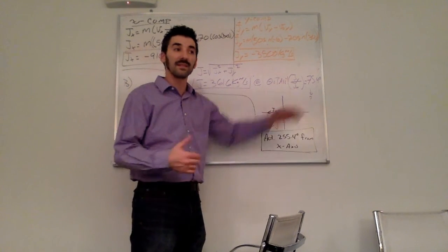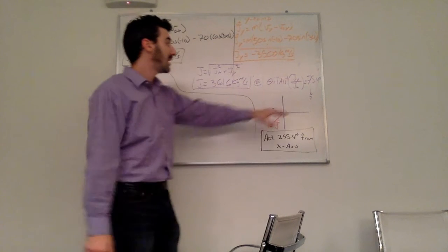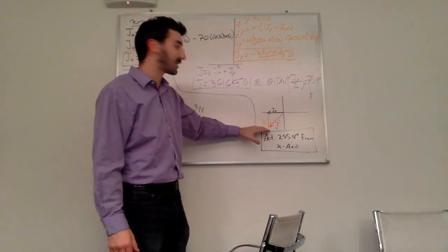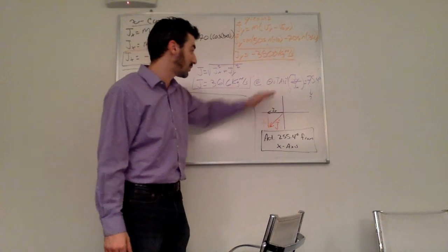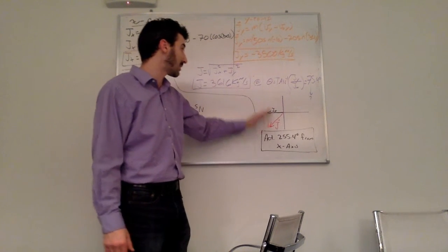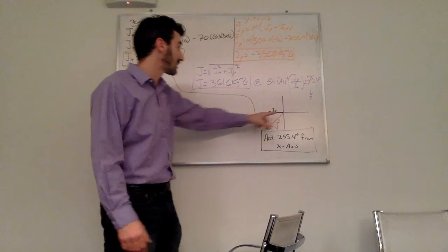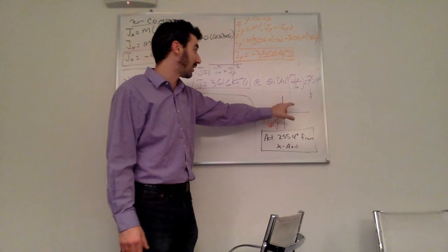You need to remember, physics is supposed to make sense. If I were to graph my two vector functions, my impulse in the x and my impulse in the y direction, you see my net impulse or the total impulse is in quadrant 1, 2, 3, quadrant 3 in the negative direction.